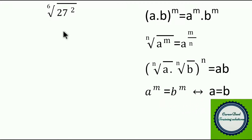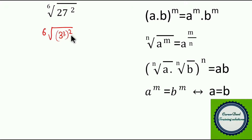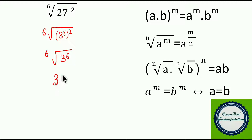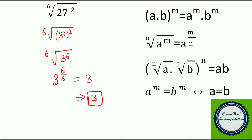Now let us enter into our first question. 27 can be written as 3 cubed. So we have the 6th root of (3^3) to the whole power 2. This is in the format of a^m to the whole power n, that is a^(m×n). So we get the 6th root of 3^6. This is equivalent to n-th root of a^m, so you can write it as a^(m/n), that is 6/6. When you cancel this, you get 3^1. So the value is equivalent to 3. The answer for this question is 3.